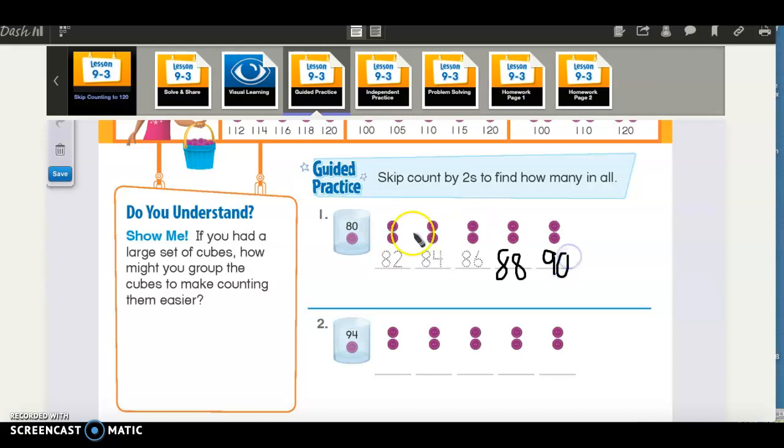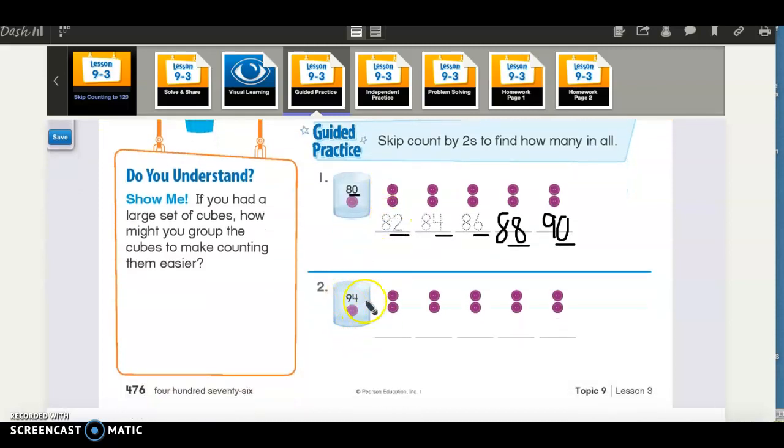So you can notice my pattern. If I look in the ones place, it goes 0, 2, 4, 6, 8, 0. That's going to be my pattern every time I'm skip counting by twos. Now let's skip count by twos here and see if we can do it. So remember that pattern. It always goes 0, 2, 4, 6, 8, 0.